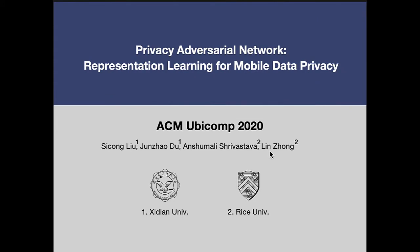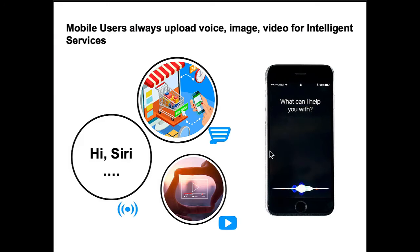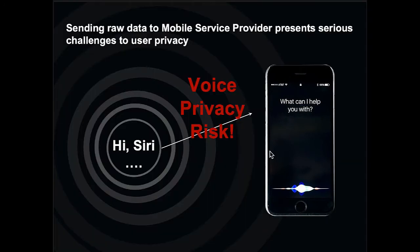Hi everyone. Privacy Adversarial Network is about how to learn the representations for mobile data privacy preservation. Today motion learning has benefited a lot of mobile services. Many such services require users to upload the raw data — for example, voice and image — to the service provider, posing well-known privacy risks.